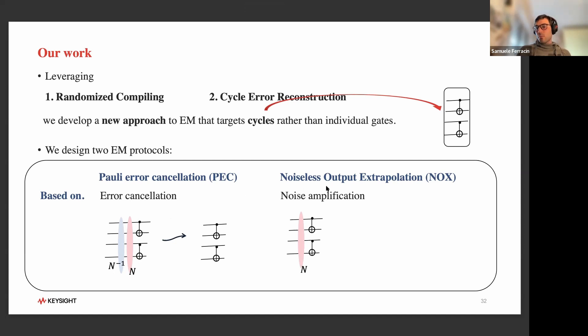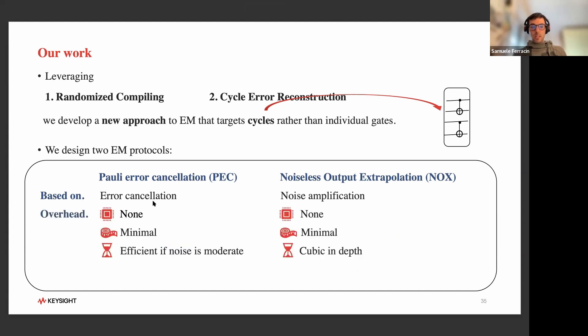These protocols have similar characteristics. They have no overhead in qubits whatsoever, unlike error correction. They have very minimal overhead in circuit depth. More importantly, they are efficient. They're efficient if the noise is moderate. They require a runtime that is cubic in depth, but in general they are efficient. You can run them on circuits of whatever size in polynomial time. They both show this nice advantage that motivated our protocol: they are robust to multi-qubit noise, unlike the existing solutions.